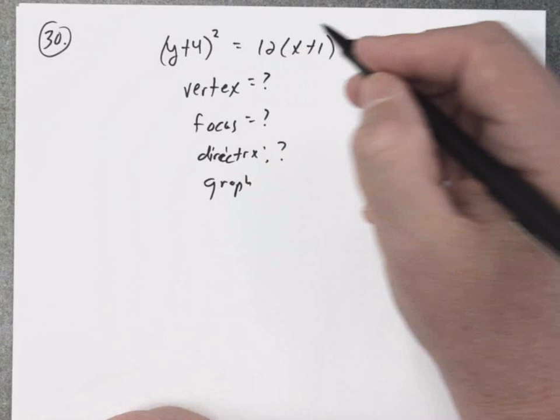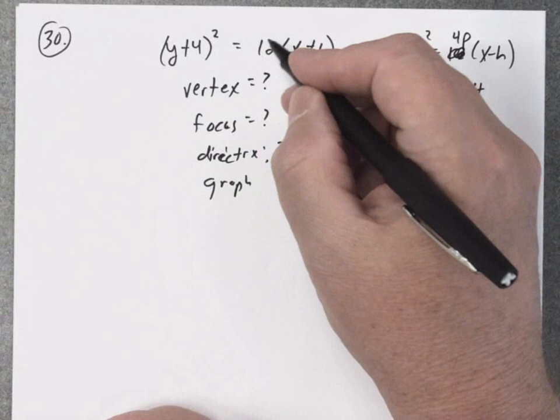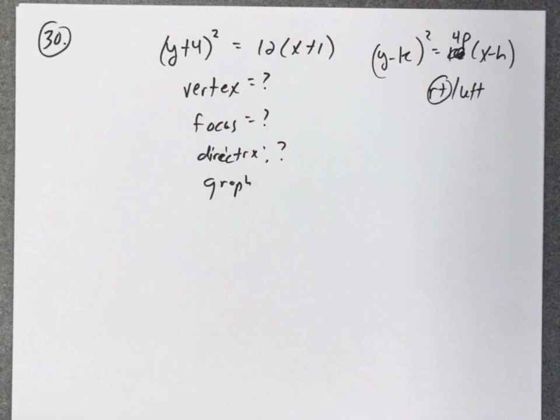And this equation is for the right or left parabola. In this case, since this coefficient is positive, we know it's going to open to the right, so in the positive x direction.